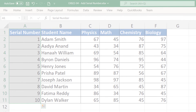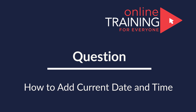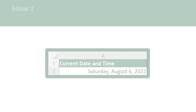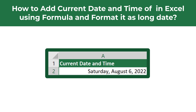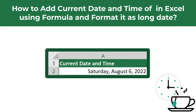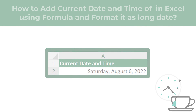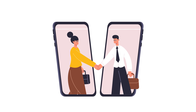Here's an interesting Microsoft Excel test question which tests your knowledge of Excel formulas. You need to show how to add the current date and time in Microsoft Excel using a formula, and then format it as Long Date. Do you know how to do it? Give yourself five to ten seconds to see if you can come up with the formula, and I am going to move forward and show you the solution.